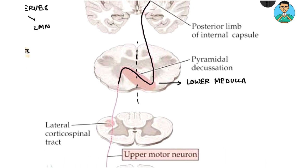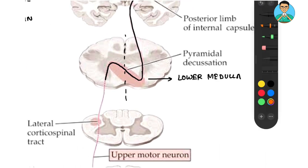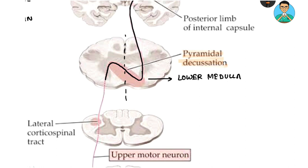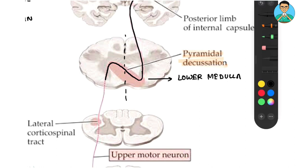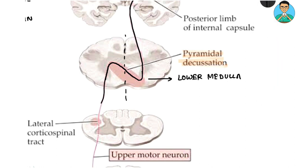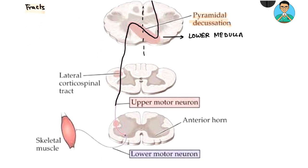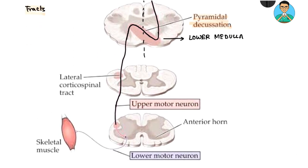This crossing is known as the pyramidal decussation. After crossing, the fibers go down through the lateral corticospinal tract up to a certain level — all of this is the upper motor neuron. After that, they convert into a lower motor neuron, which goes to the muscle and supplies it.